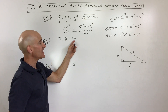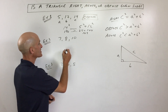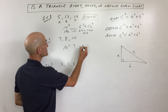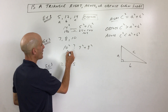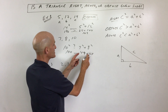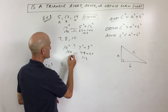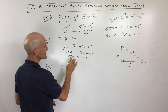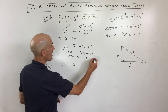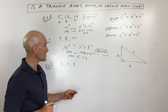Let's go to example number two. We've got 7, 8, and 10. C is the longest side, so I've got 10 squared versus 7 squared plus 8 squared. That's 49 plus 64, which equals 113. So 100 is less than 113 — that means this is an acute triangle, meaning all the angles are less than 90 degrees.